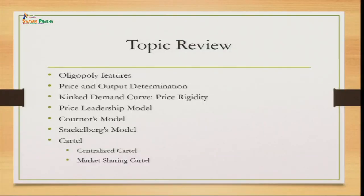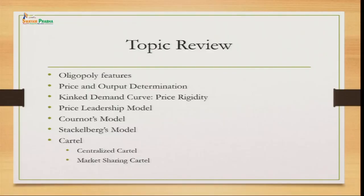We also discussed Stackelberg's model, which is an extension of Cournot's model looking for sophisticated firms — we saw the interaction between firm A and firm B, where one is a sophisticated firm and the other is the leader, and how they maximize profit. Lastly, we discussed the cartel where firms in the oligopoly market join hands and work together as a collusion. There can be a centralized cartel where firms make centralized decisions on price and output, or a market sharing cartel where the market share is divided among firms and then each makes decisions independently.